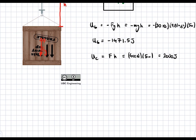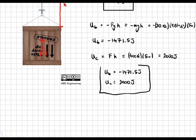So we can write out our answer. Ug equals negative 1471.5 joules, and U of the crane is going to be equal to 2,000 joules. We box those in — this is our first answer.